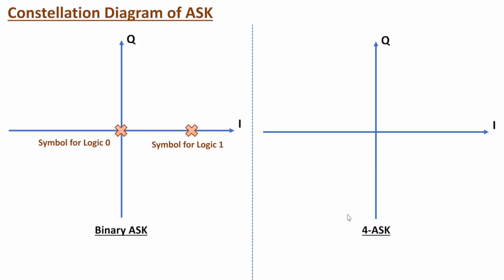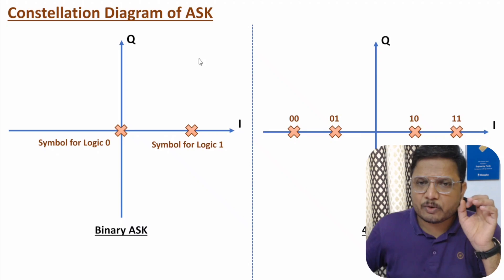For 4-ASK, there are four symbols: 00, 01, 10, and 11. All symbols have zero phase. The magnitude of symbol 00 is -A, symbol 01 is -A/2, symbol 10 is +A/2, and symbol 11 is +A. That is how one plots the constellation diagram of ASK based on magnitude and phase. In the next video, I will explain the calculation of amplitude so you can solve problems.